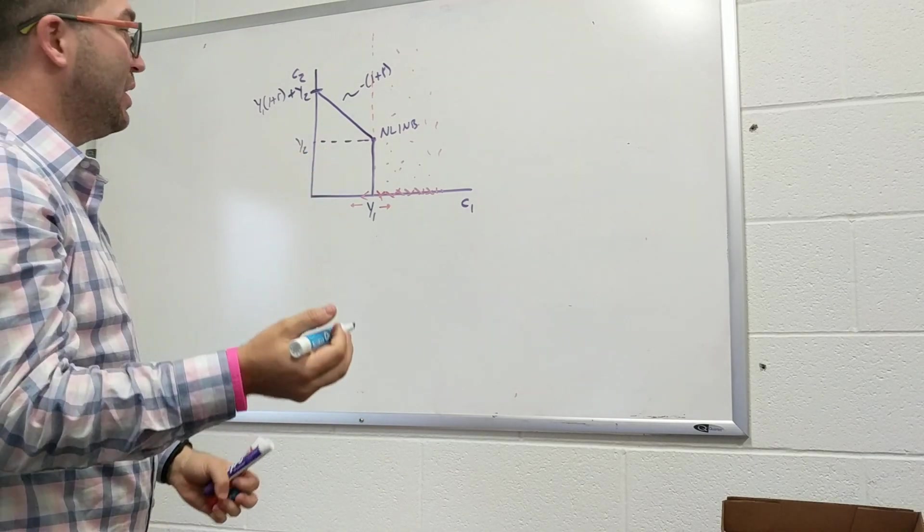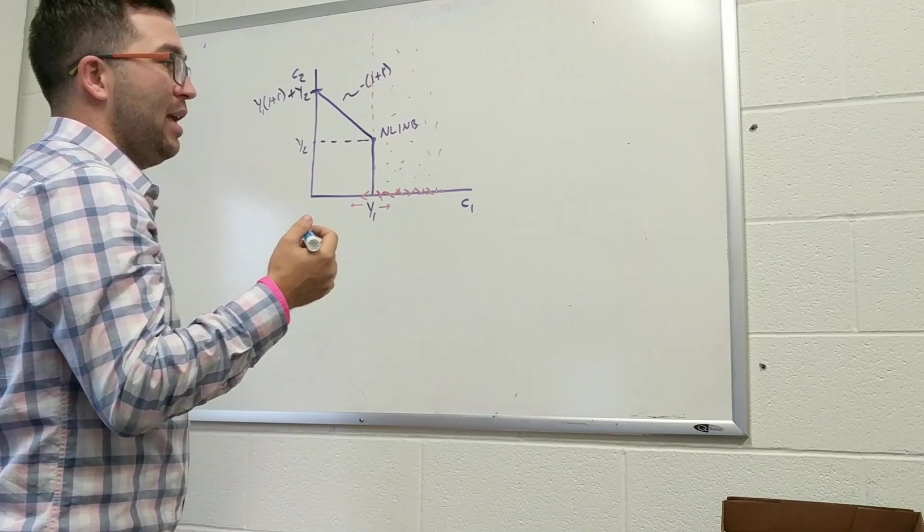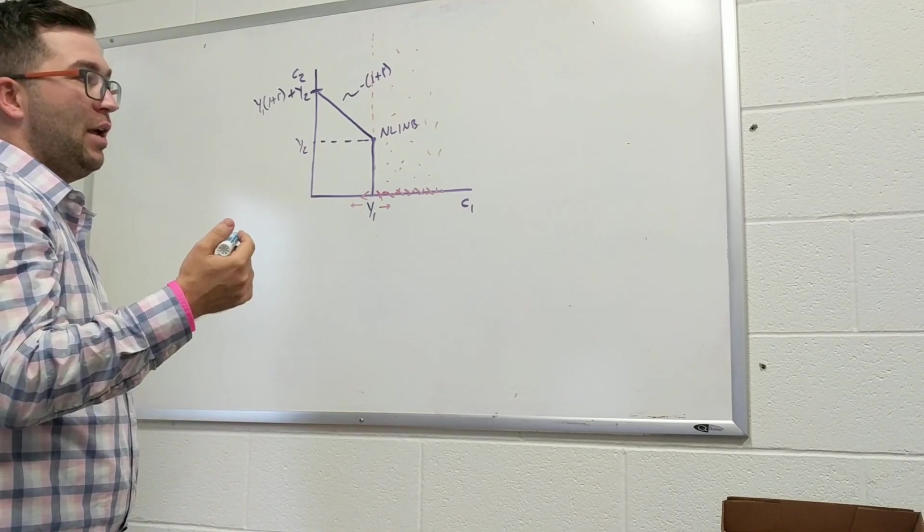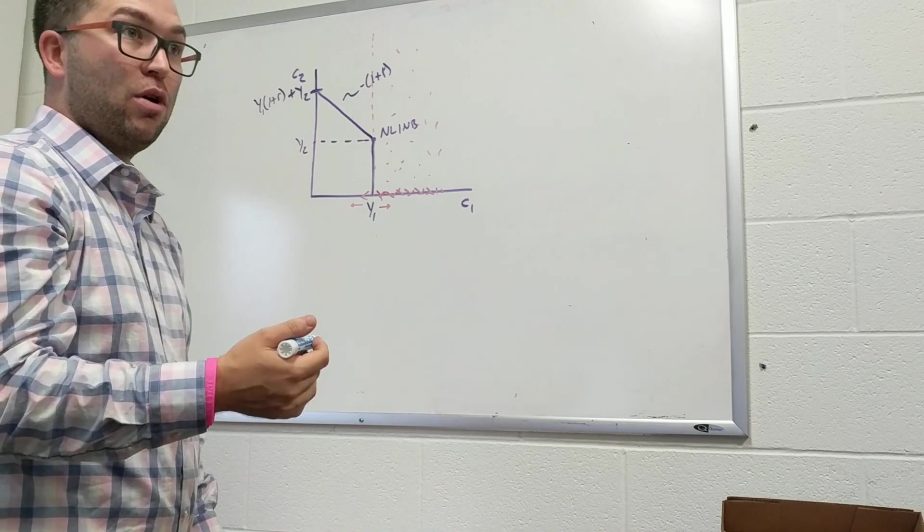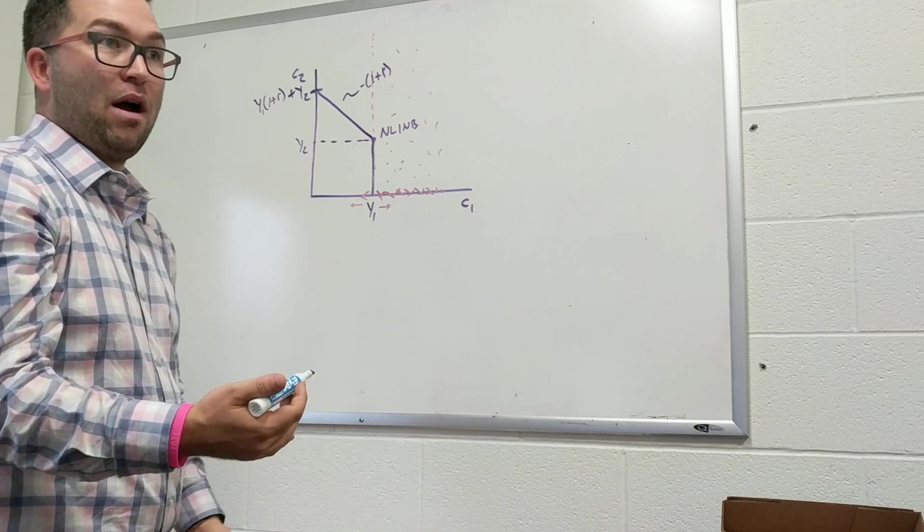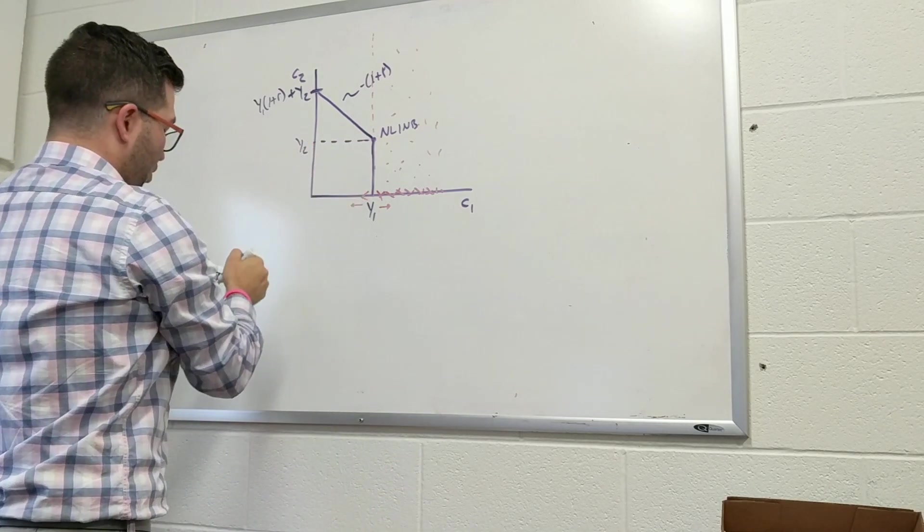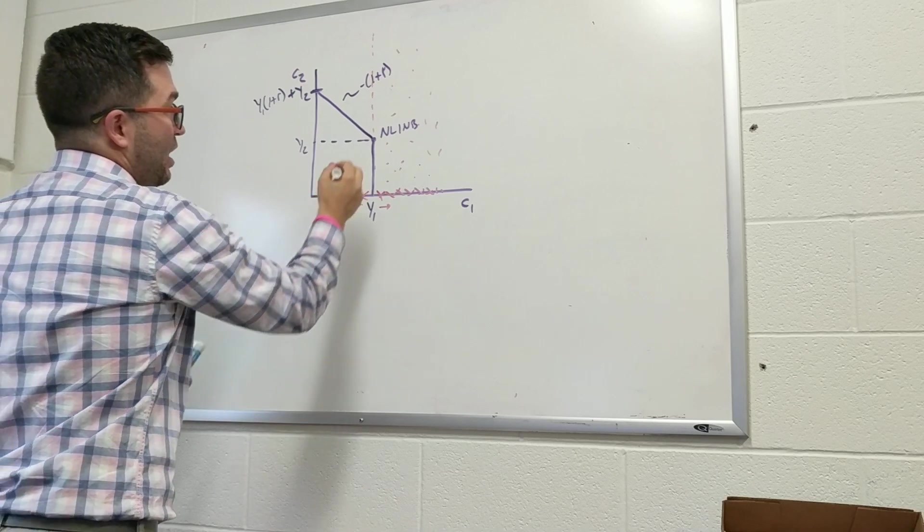The last part of this question, this was an old exam question, was saying, I want you to show me that if Ray's preferences was to be a borrower, show me with indifference curves that he would have been better off. Show me that than if he is borrow constrained. So what we have to do is we have to say, okay, well, let's assume that he could have borrowed.